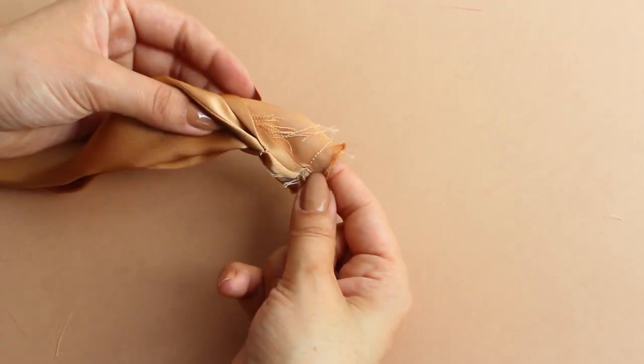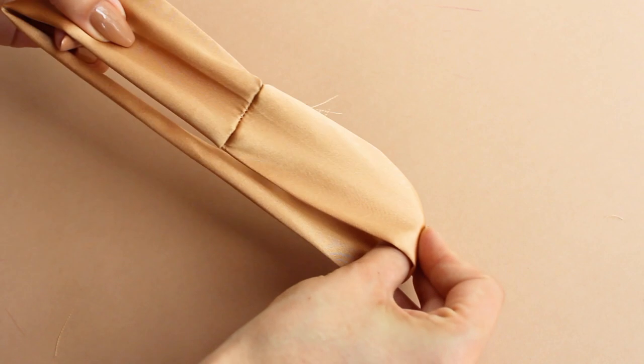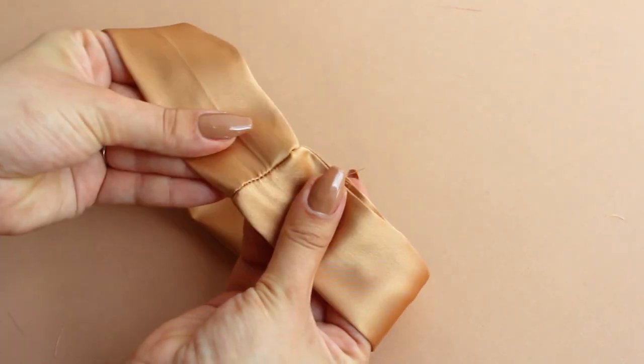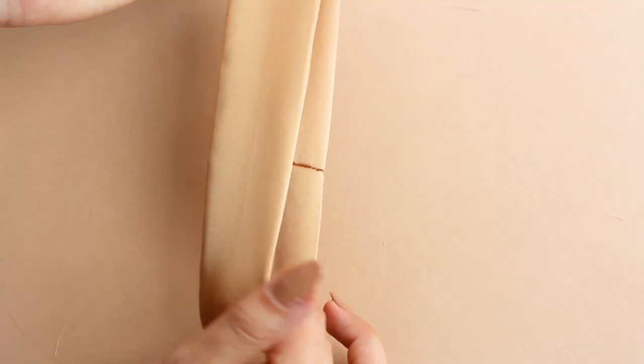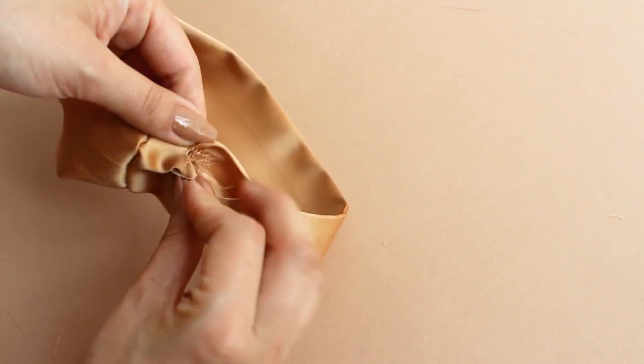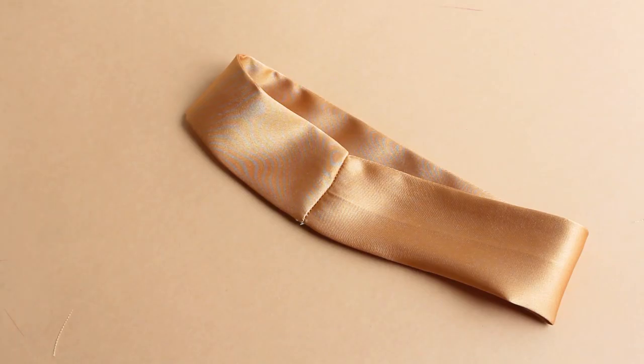Pull the scrunchie to turn it right side out and press the seam.